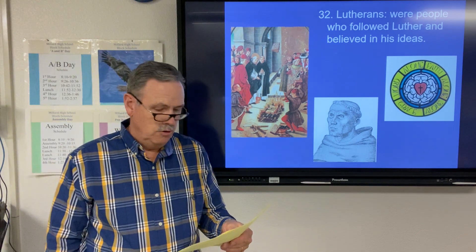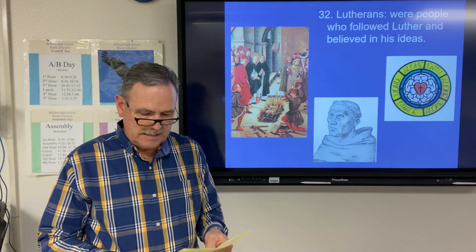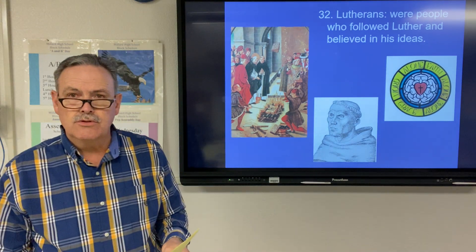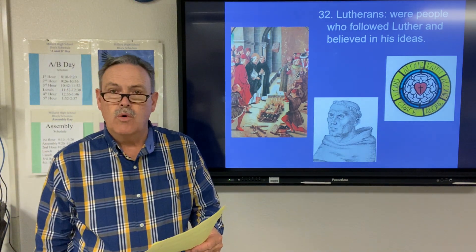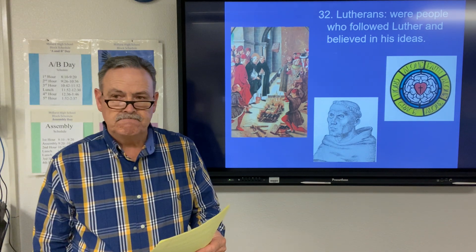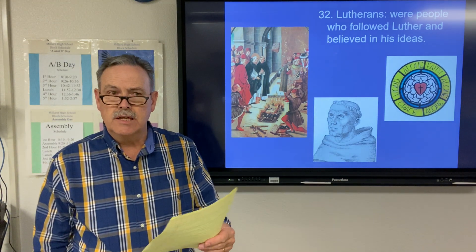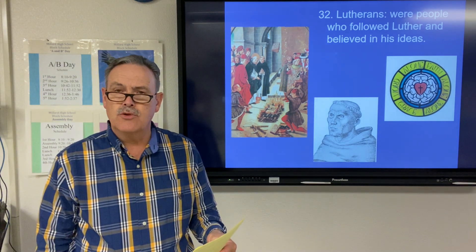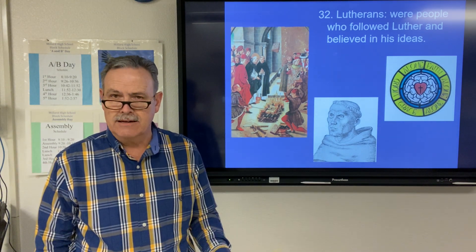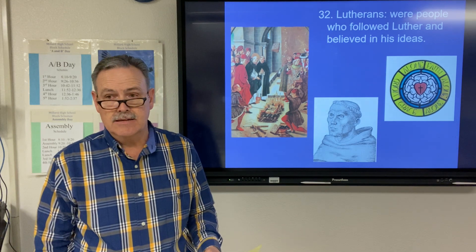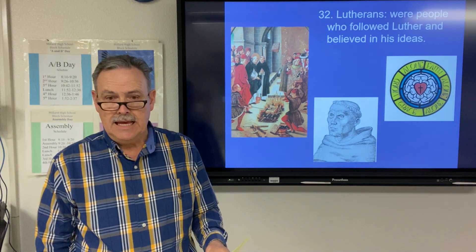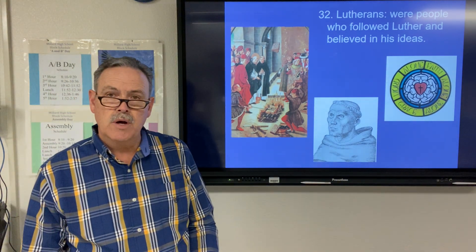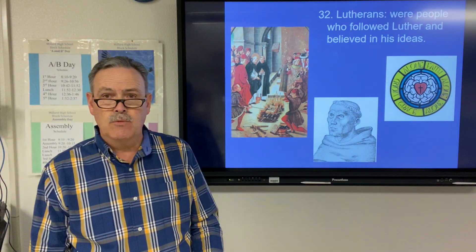Lutherans were people who followed Luther and believed in his ideas. He was called into the city of Worms — W-O-R-M-S — to see if he would take back what he had said. When you take back something you've said, it's called to recant, and they wanted him to recant. He refused. He was excommunicated in 1521, but feared that perhaps more than that would happen to him — maybe he would be burned at the stake.